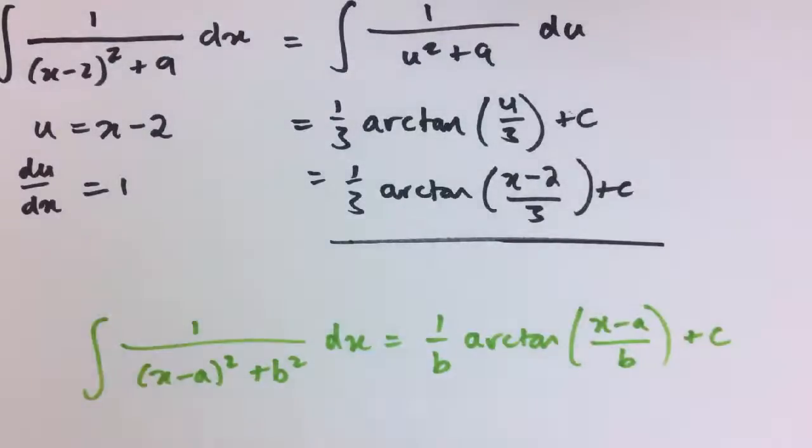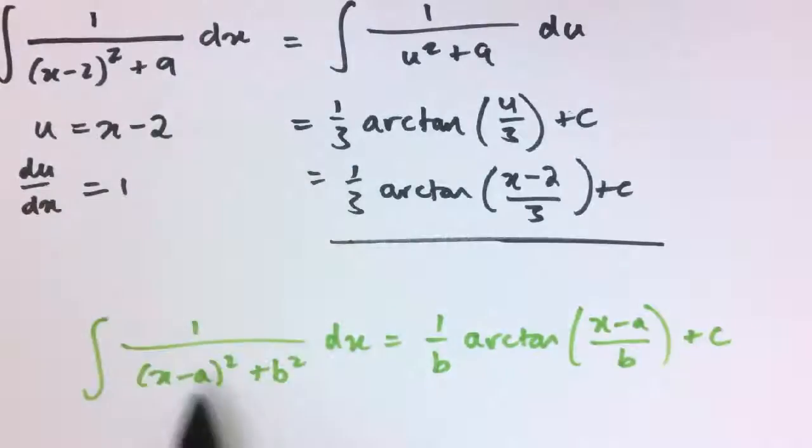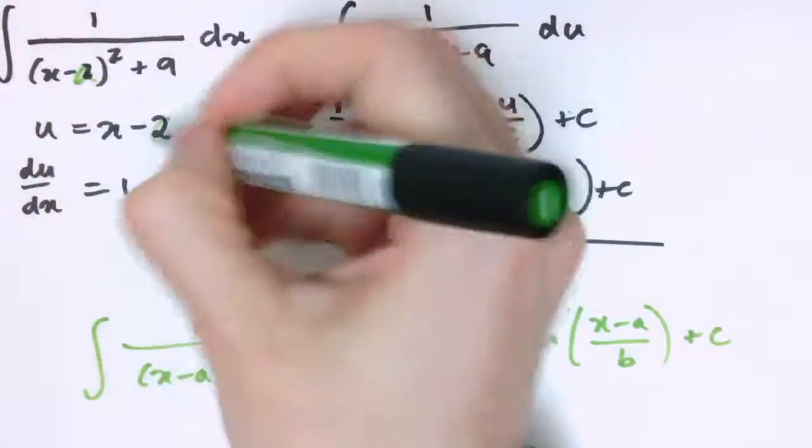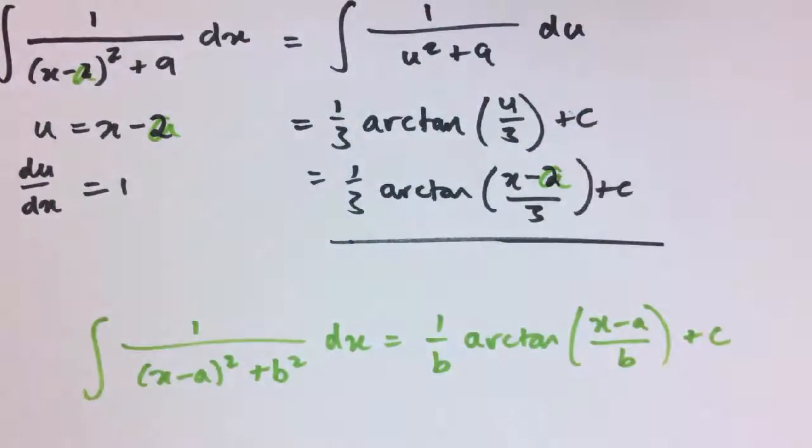And again, you can see that this result easily generalises, if I've got a different number than 2 here, say a, then really I just have a here and here, it doesn't really affect the argument until I substitute it back in over here, so 1 over x minus a squared plus b squared dx is 1 over b arctan x minus a over b plus c.